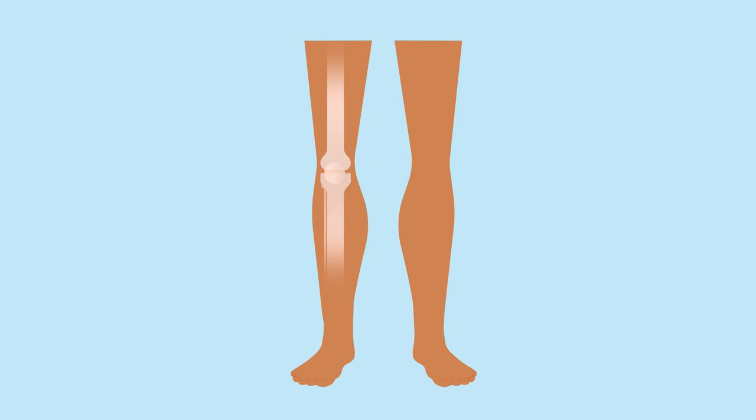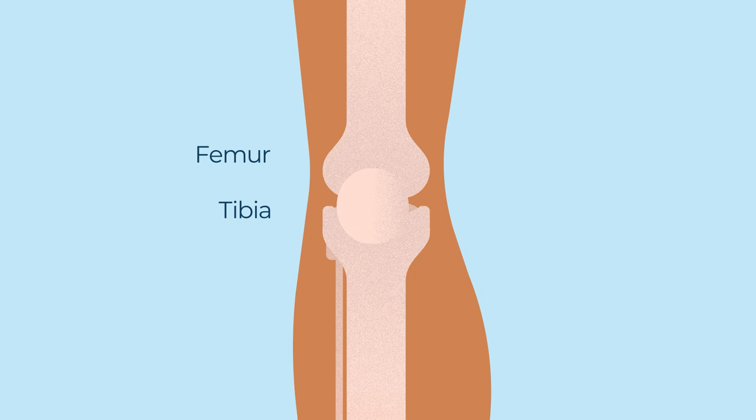Your knee joint is made up of the bottom of your thigh bone, femur, and the top of your shin bone, tibia.